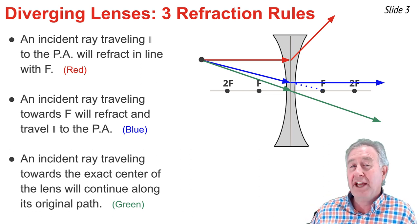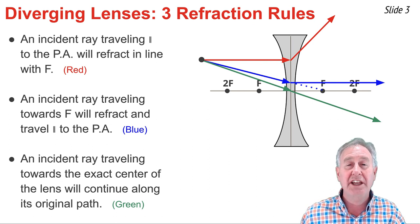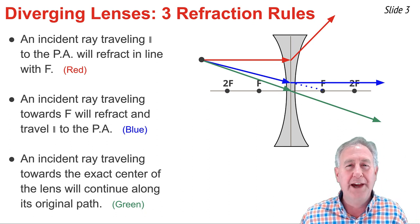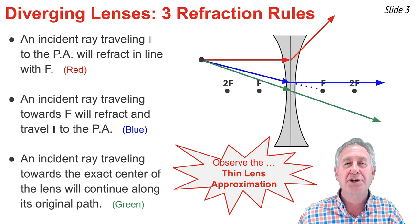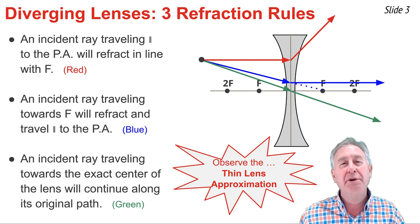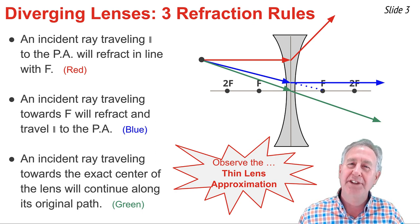The third rule of refraction is that a ray of light heading towards the exact center of the lens will refract as it enters and refract as it leaves, but the net effect is that it continues along its original path. You'll also note that I follow the thin lens approximation — instead of refracting light as it enters and exits, I refract it once at the vertical axis of the lens.